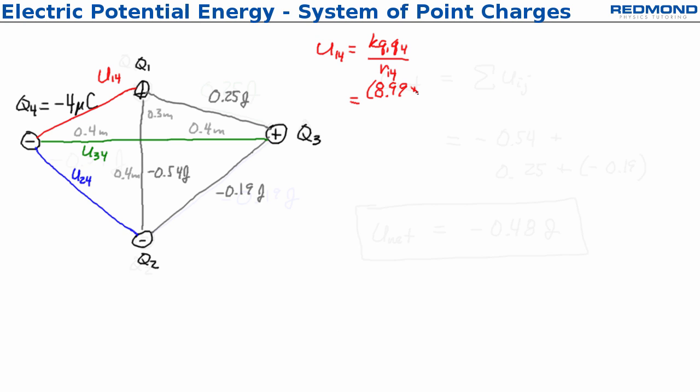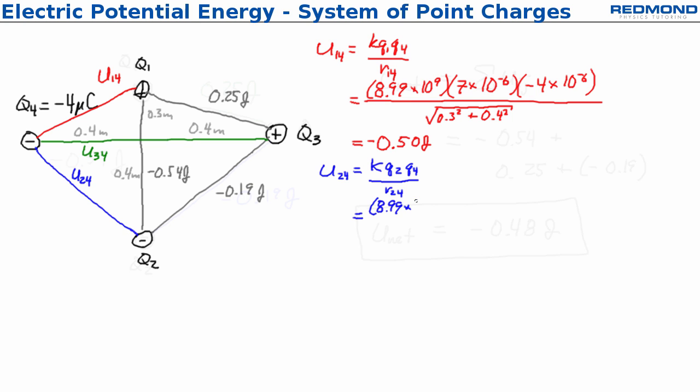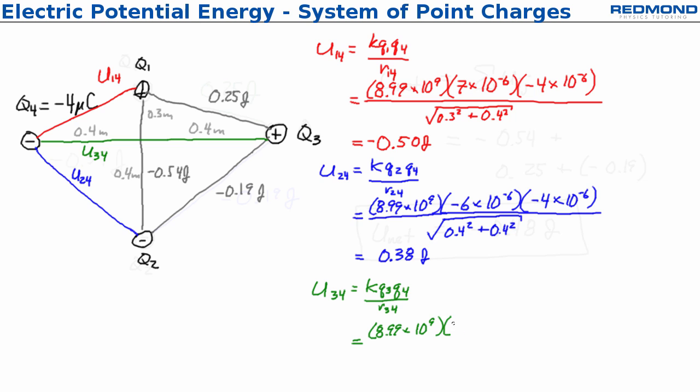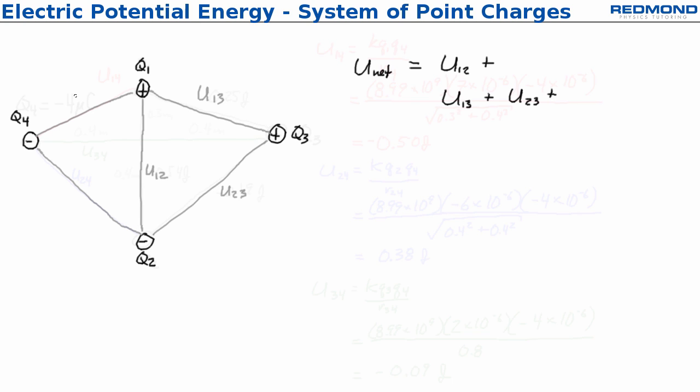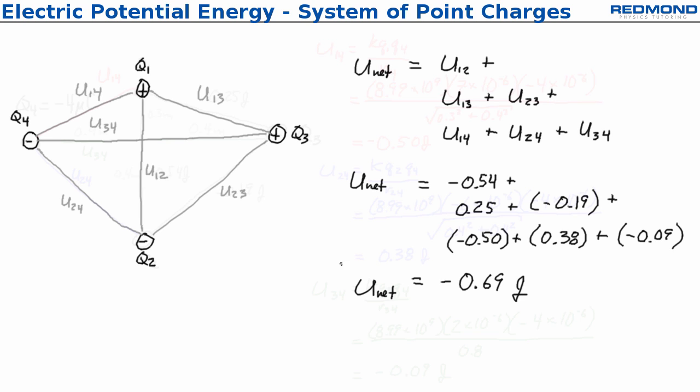We have u14 in red, we'll have u24 in blue, and we'll have u34 in green. Now with the system of four point charges, we have to consider all of the interactions that they have with each other, adding them one at a time. When we're adding up the net electric potential energy, we have to consider each contribution. So u_net: first we had u12, but then we need to also add u13 and u23, and then we add u14, u24, and u34. This gives us the net final potential energy for this system of four point charges to be -0.69 joules.